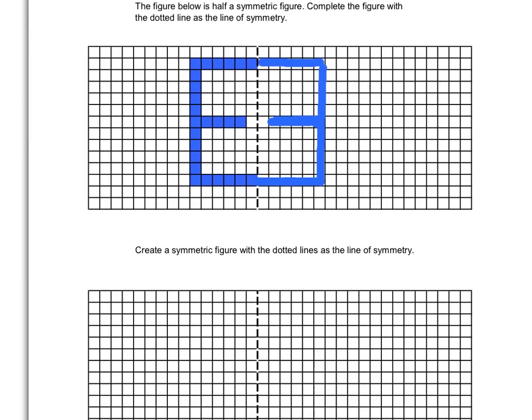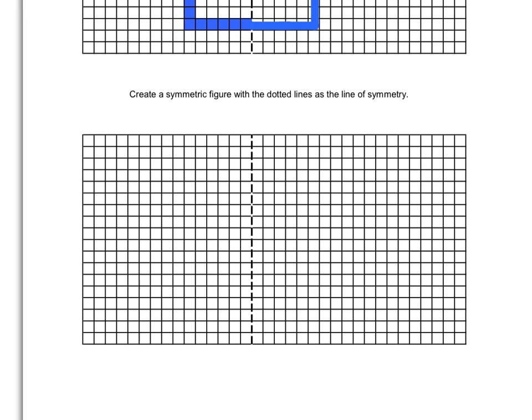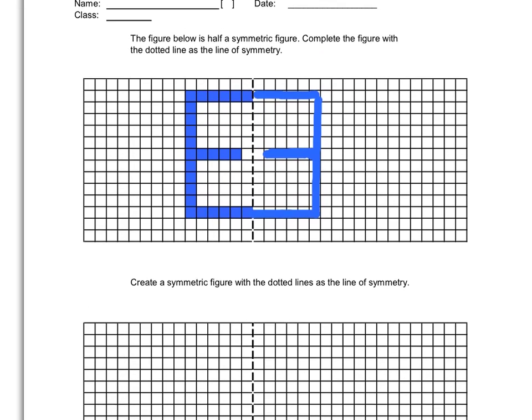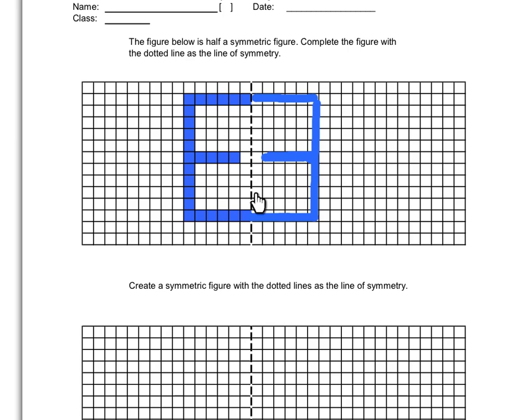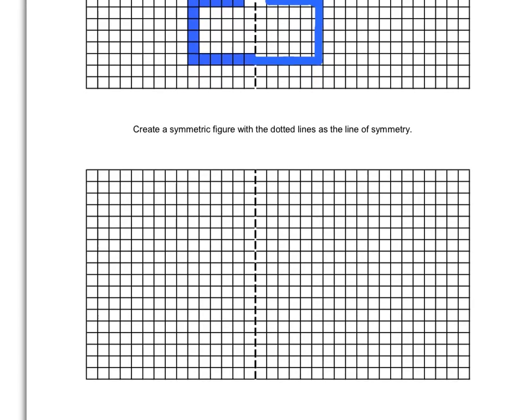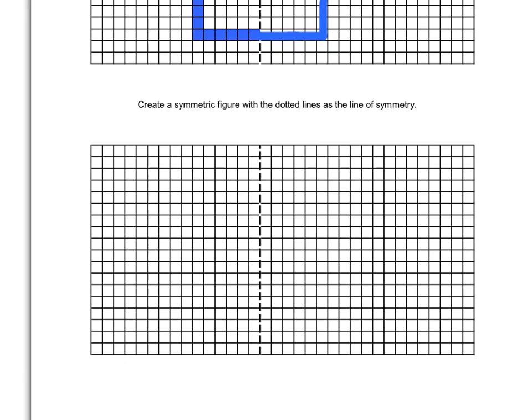Now let's look at the second part here. Now the second part is where you need to do it on your own. So your job for this part is to create a symmetric figure with the dotted lines as the line of symmetry. So you can use this as an example. Alright, so it should look something like this. And I will leave it up to you how creative you want it to be.